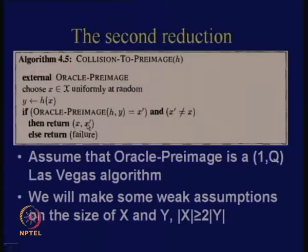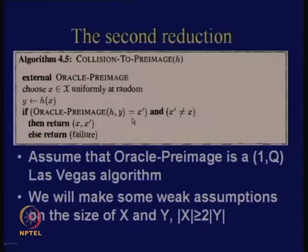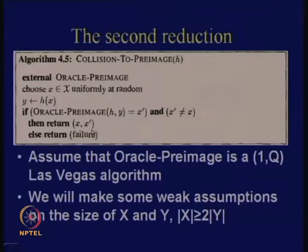We assume that there is a solution to the preimage problem and from there we show that in that case we can also solve the collision problem. You choose x uniformly at random, compute the hash value h(x), and engage the algorithm for computing the preimage. This is an oracle to which you are asking a question and it gives you back an x'. You check whether x' and x are the same. If they are not the same, then you can return (x, x'), because both of them have the same hash value and they are not equal — this is a solution to the collision problem.